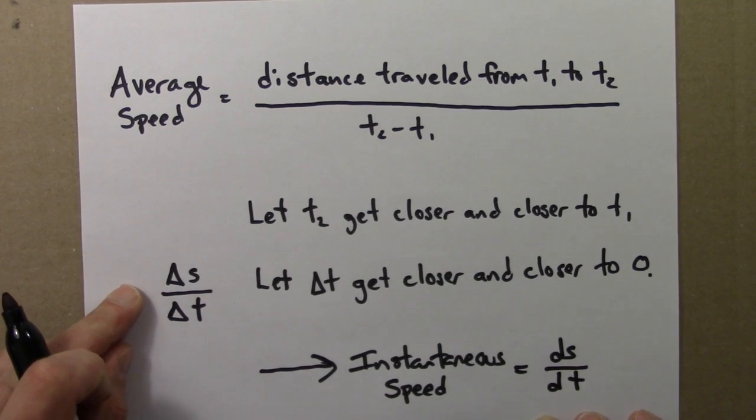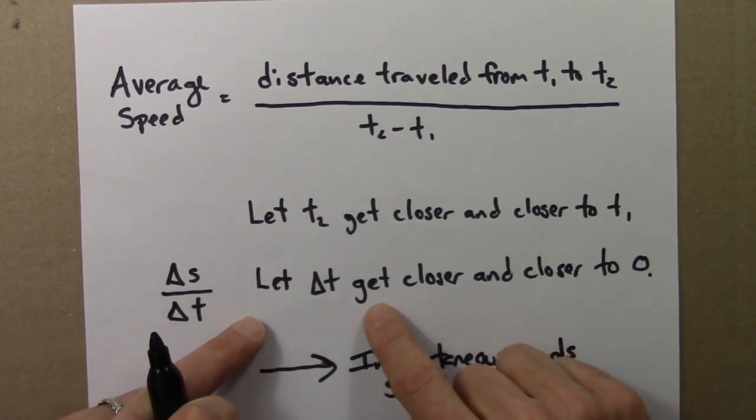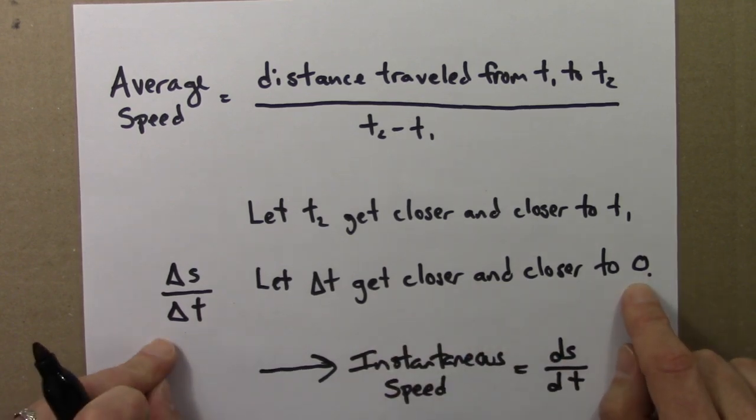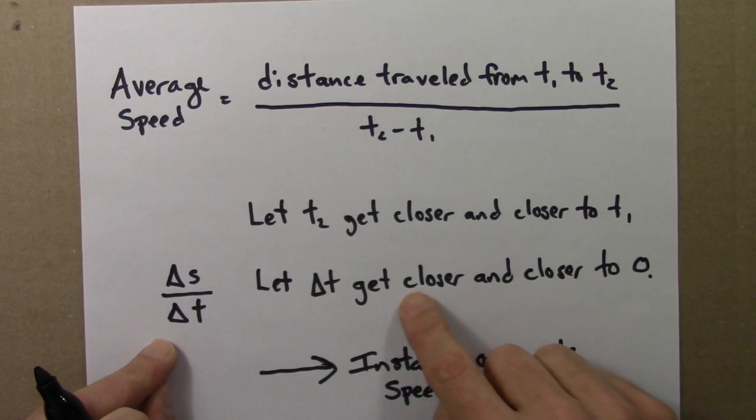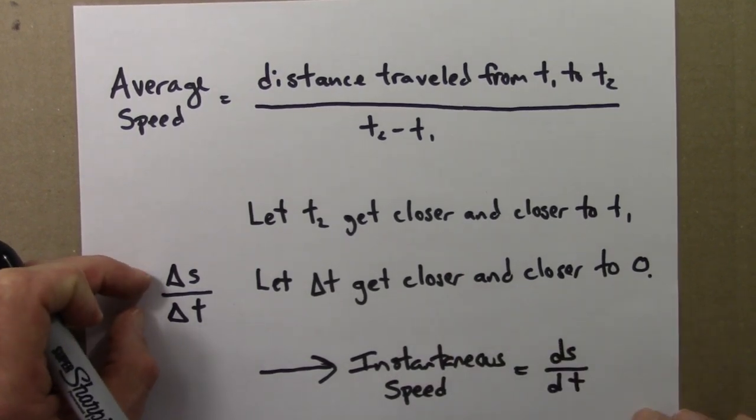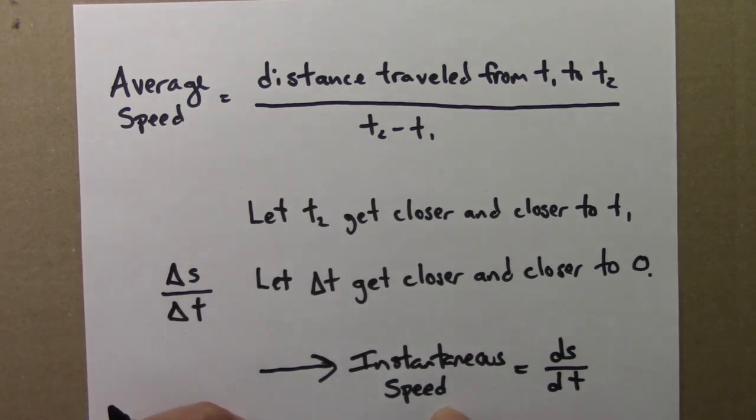So if I'm thinking in terms of this notation, delta s over delta t, I let delta t get closer and closer to 0. I can't just plug in 0, because then it'll be dividing by 0. But I let it get closer and closer to 0, and I monitor what this ratio becomes. And the result is the instantaneous speed.